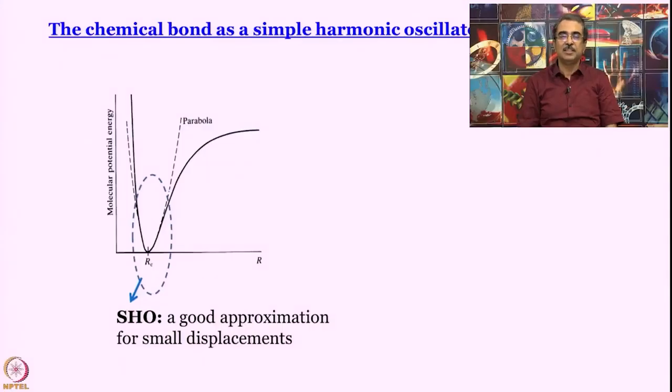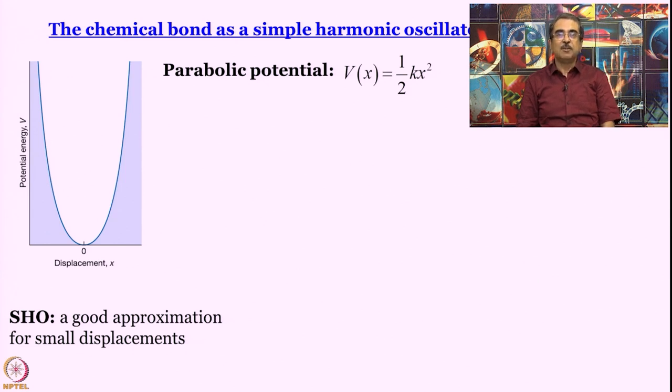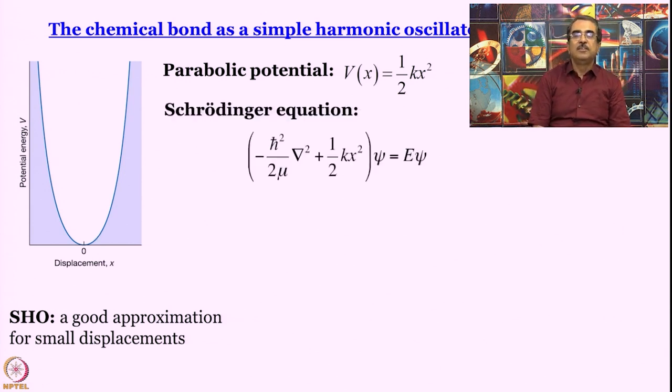We are starting with the hope that it is a good approximation - simple harmonic oscillator for small displacements. This is our parabolic potential and we can plot it like this. Now, we will write Schrödinger equation as usual. What is it?